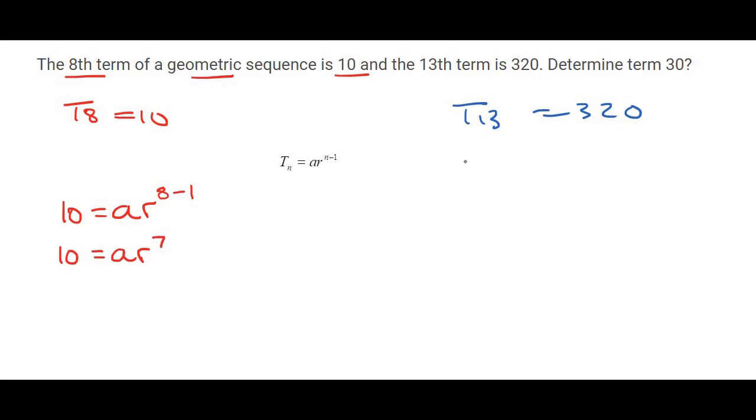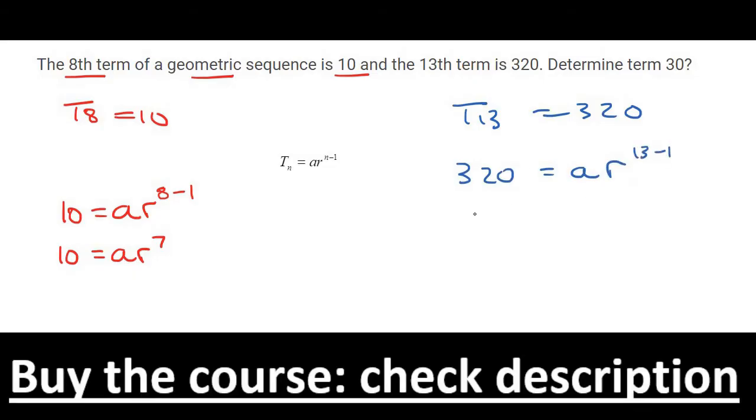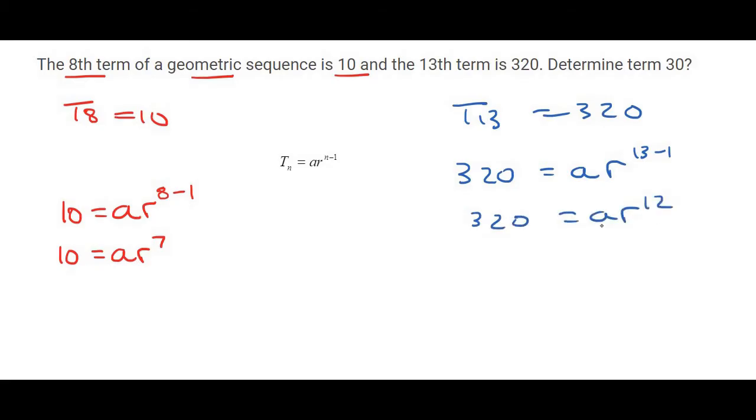On the other side, we would get 320 equals AR to the power of 13 minus 1. And so that's going to end up giving us AR to the power of 12. Now we have two equations with two unknowns, and so we solve simultaneously.